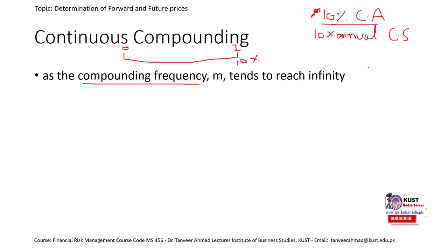With semi-annual compounding, interest is paid once after six months and then again after another six months, which totals one year. In this case, the interest would be 5% and then 5% again. So the interest is 10% annual — if we add them up we would have a 10% interest, but they are compounded semi-annually.